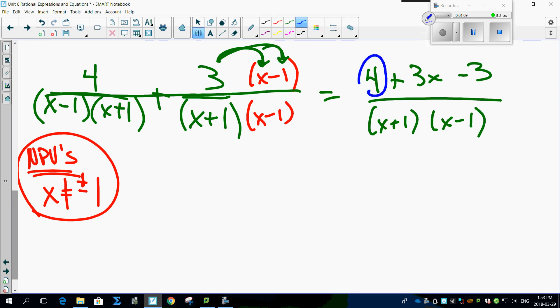Combine like terms. 4 and minus 3 gives you 3x plus 1 over (x plus 1)(x minus 1), and you are done. That quick, that fast.